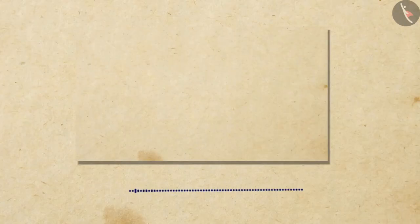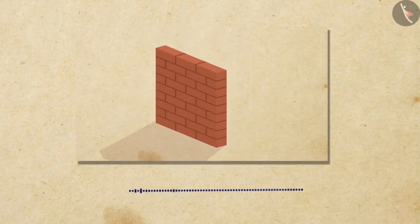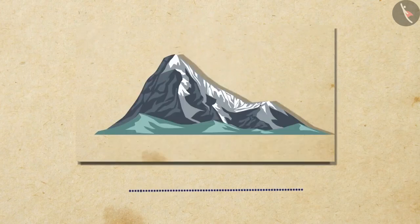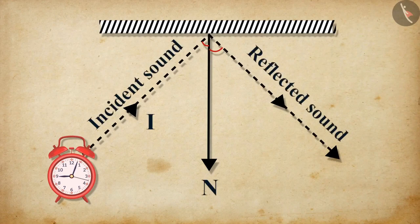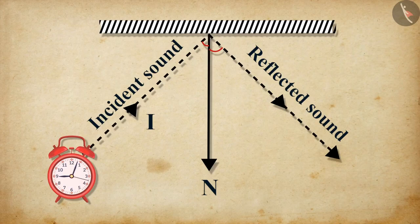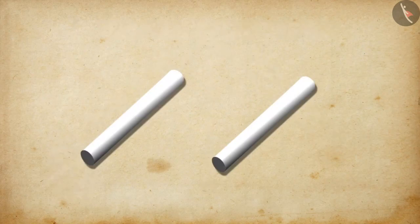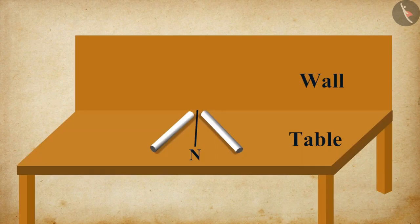An obstacle of a large size which may be smooth or rough is required for the reflection of sound waves. Now, let us perform a simple experiment to understand the relationship between the angle of incidence and the angle of reflection. Take two identical pipes of sufficient length. Place them on a table near to a wall as shown in this image.